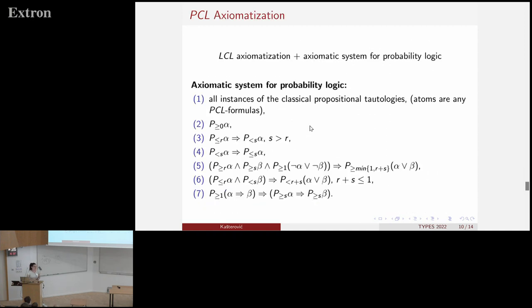Again I want to say what is the axiomatization and what is the semantics of this logic. Since PCL is obtained by defining probability logic over an LCL logic, we define the axiomatization as combination of axiomatizations of these two systems. So the LCL axiomatization we already saw a few slides ago. And axiomatic system for probability logic consists of these seven axiom schemes and again modus ponens. So the first axiom scheme actually deals with these classical propositional connectives that connect probability formulas. And the other six axiom schemes are about this probability operator that we added to the system.